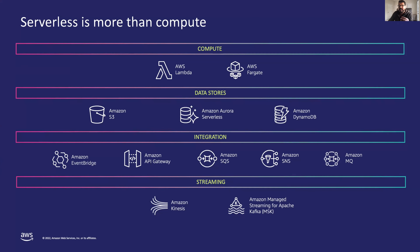In the streaming arena, we have many service offerings as well. Amazon Kinesis makes it easy to collect, process, and analyze real-time streaming data so you can get timely insights and react quickly to new information. Amazon Managed Streaming for Apache Kafka, or MSK, is the managed service offering for Kafka, so if you are using Kafka today, you can opt for this.